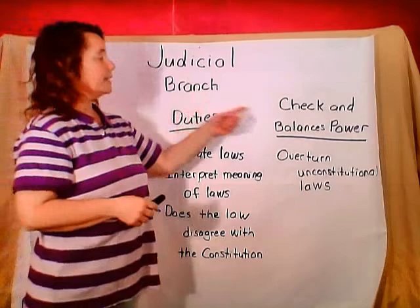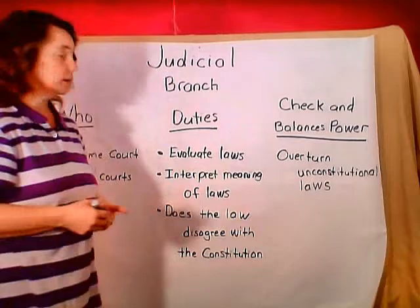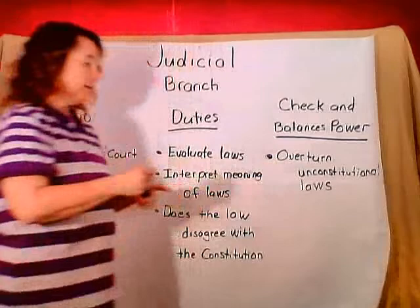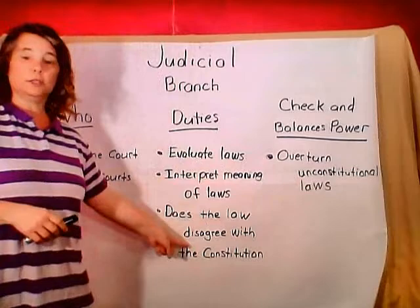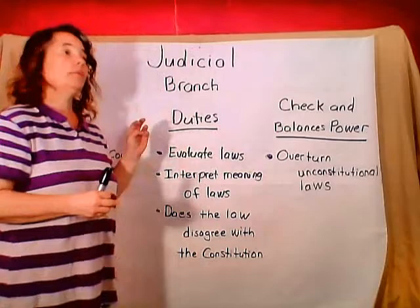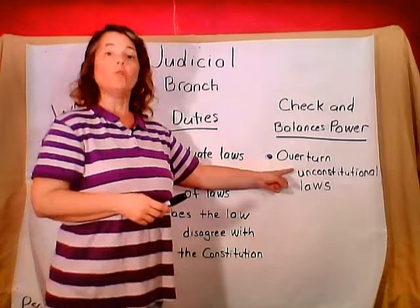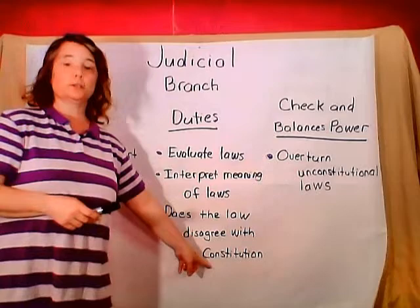Now let's find out how the judicial branch gets to check the power of the other branches. They have one way they can do it: they can overturn unconstitutional laws. Basically, that means they can change any law that doesn't agree with the constitution. Remember, the legislative branch makes the laws and the president can veto the laws, but the judicial branch can change or overturn any law that they don't think goes with the constitution. That is their checks and balances power.